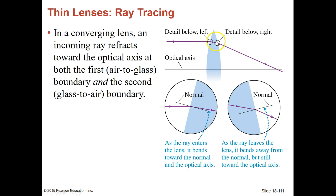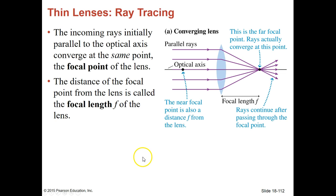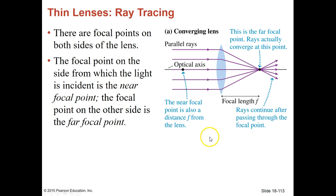Because it refracts at both boundaries, the ray continues to point towards the axis, and that's why we have a focal point. This shows how light bends towards the normal and then away from the normal, but continues to bend in the same direction. The incoming rays initially parallel to the axis converge at the same point — we call that the focal length. There are focal points on both sides of the lens. Notice that we are using parallel rays of light, and that helps us know where that focal point is.